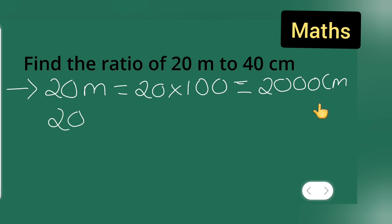Next step, y'all write down this as it is: 20 meter. We have to find the ratio of this, right? 20 meter and 40 centimeter. Basically this is equal to what? 2000 upon 40.